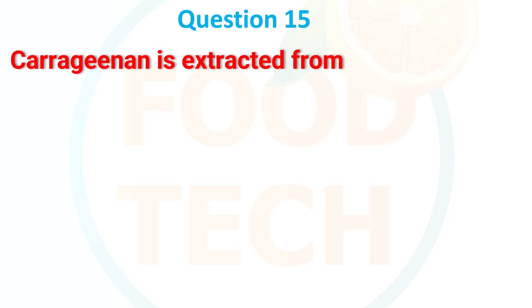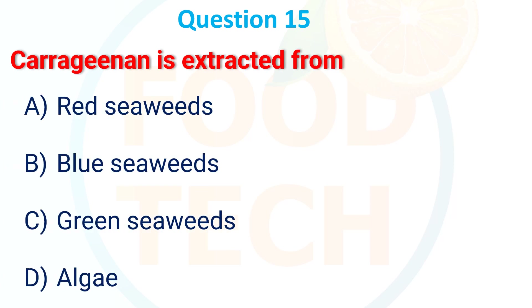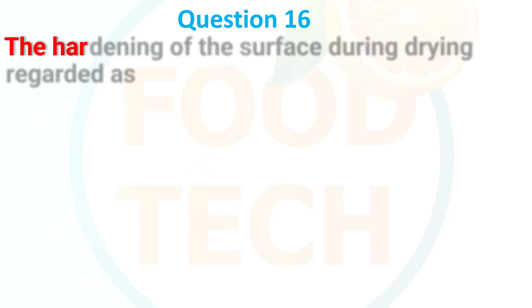Carrageenan is extracted from: a) red seaweed, b) seaweed, c) green seaweed, d) algae. The answer is a) red seaweed.